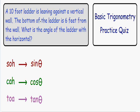And here we have a word problem. It says that a 10 foot ladder is leaning against a vertical wall. The bottom of the ladder is 6 feet from the wall. The question is, what is the angle of the ladder with the horizontal?